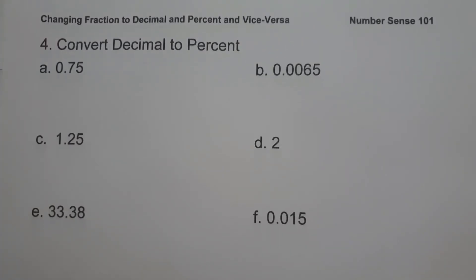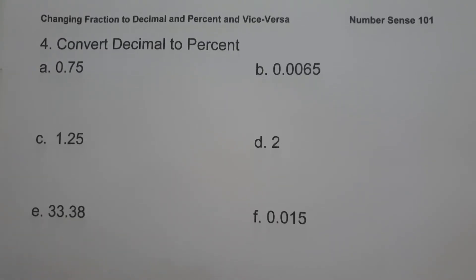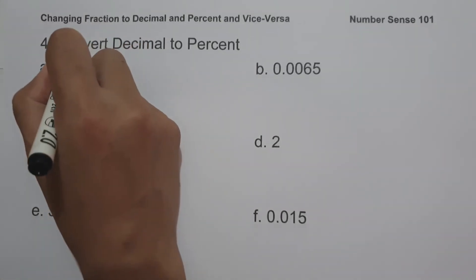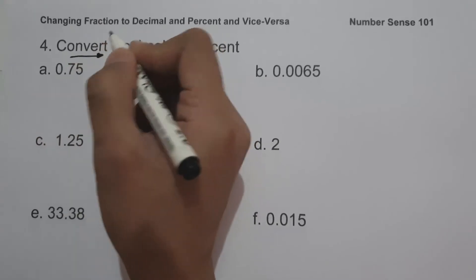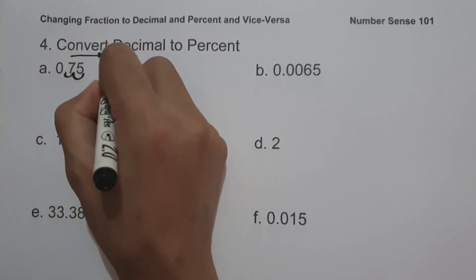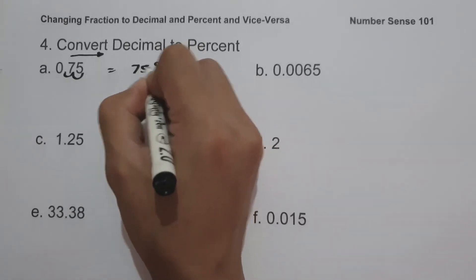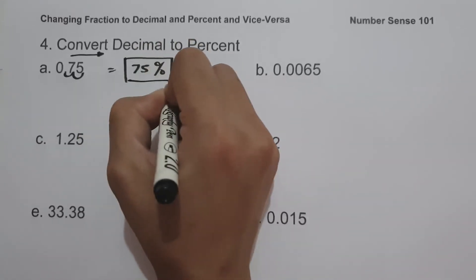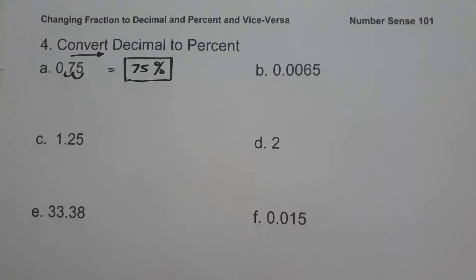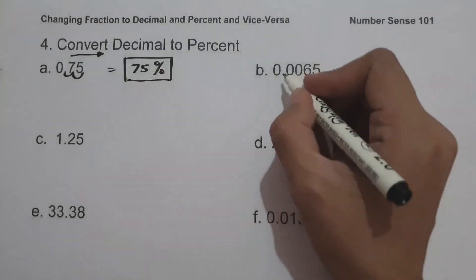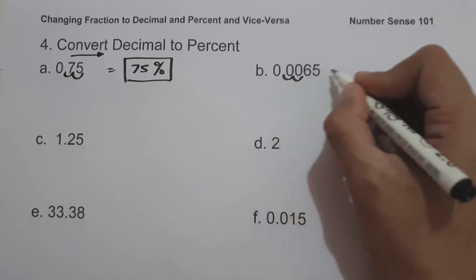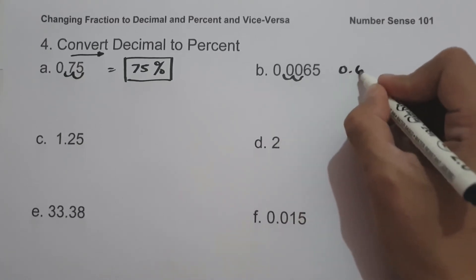On the fourth set of examples, we are going to convert decimal to percent. In converting decimal to percent, we simply move two decimal places from left to right. On letter A, we have 0.75. Moving two decimal places from left to right gives us 75%. On letter B, we have 0.0065. Moving two decimal places gives us 0.65%.